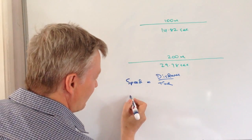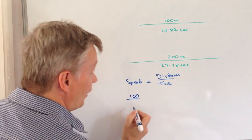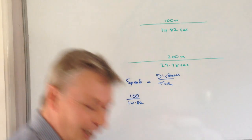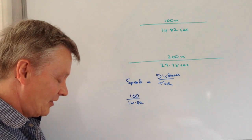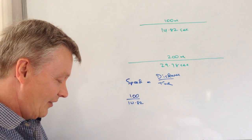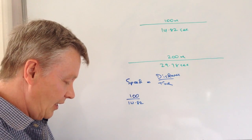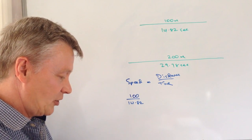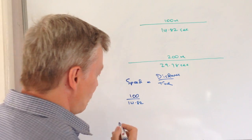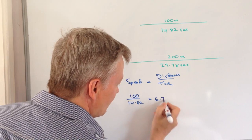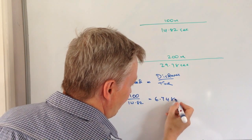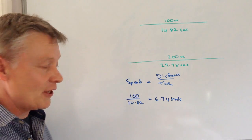So with race A we've got 100 divided by 14.82. I'm going to have to get my calculator. That's 100 divided by 14.82. And that's going to give us a speed of 6.748 metres per second for the first race.